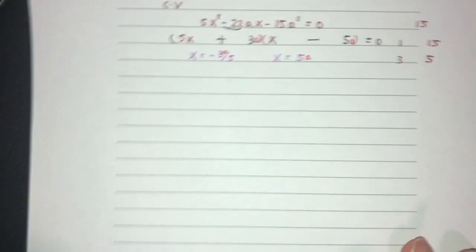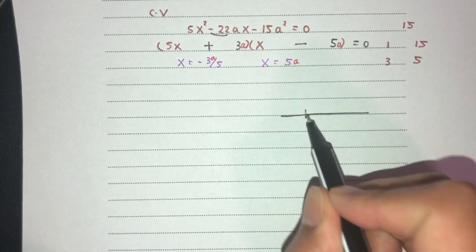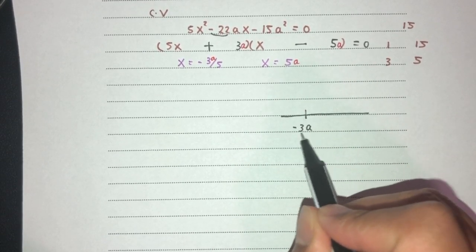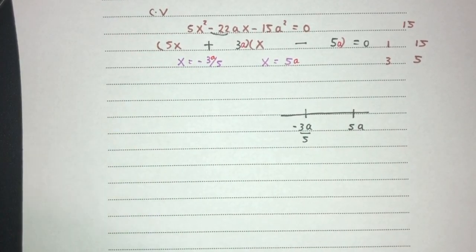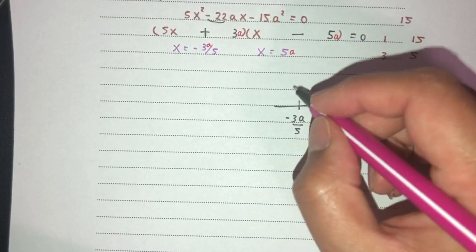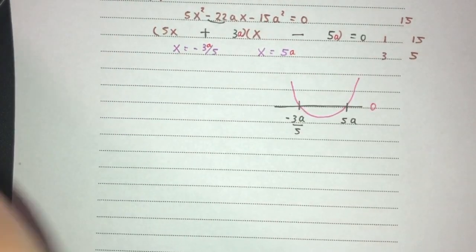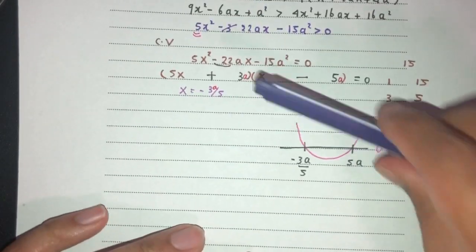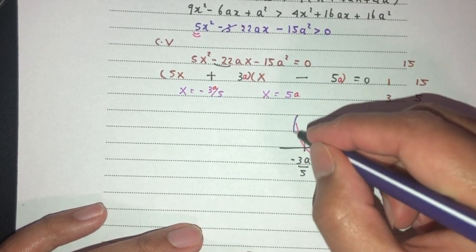Finally, we have to use the number line to help us find the answer. This is minus 3a over 5, and this is 5a. Because this is positive over here, we understand it will have a minimum shape, something like this. This is the line of 0, so we require the condition needs this to be more than 0, so above this one. We have to be on this side and this side.